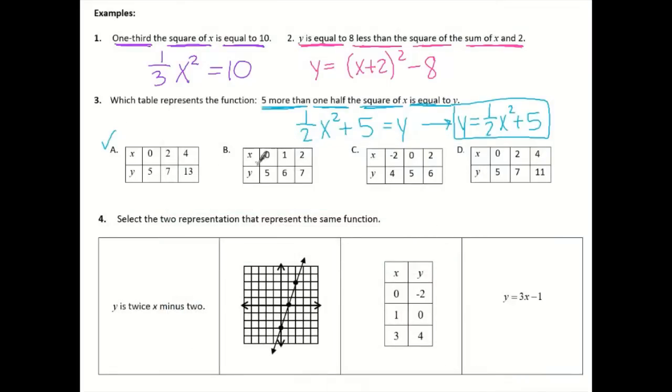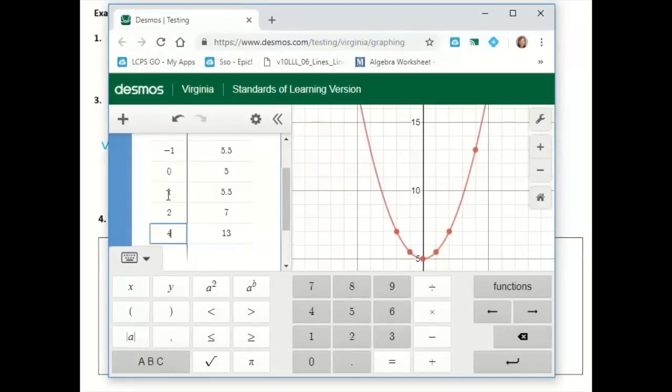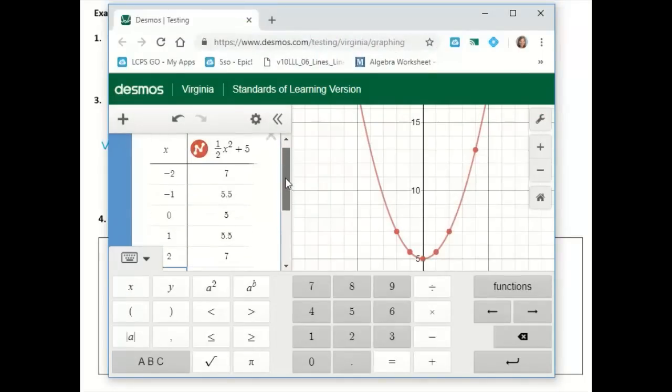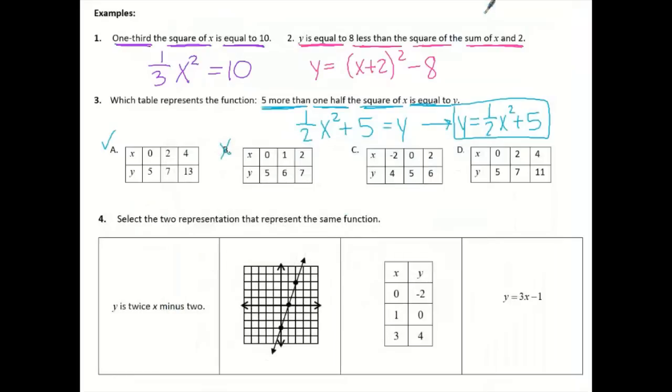What I do like to do is just double check the other ones in case I made a mistake. So this one has 0, 5, 1, 6. So let's take a look at my Desmos here. This says 1 and 5.5. So there's no way B can work. Letter C says negative 2, 4. Let's see what Desmos says for negative 2. Oh, negative 2, 7. So once it doesn't work for one thing, like this one doesn't work, in this one, 1, 6 didn't work, the whole thing doesn't work.